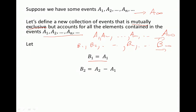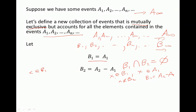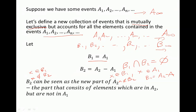Let B1 equal A1, so B1 has all the same elements as A1. Let B2 equal A2 minus A1, meaning all elements that are in A2 but not in A1. You can see that B1 intersect B2 is an empty set: if an element x is in B1 then it is in A1, but it cannot be in B2 since B2 = A2 minus A1. So B1 and B2 are mutually exclusive, and B2 is the new part of A2.